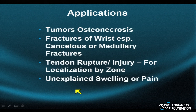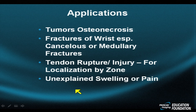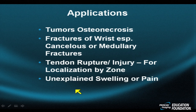Osteonecrosis is a diagnosis that has fallen to MRI. In the past, we used dynamic contrast-enhanced MRI to improve accuracy, but accuracy is only improved with dynamic imaging by perhaps one to two percent. Non-contrast MRI looking for areas of necrotic low signal bone on all sequences has a very high accuracy rate and positive predictive value for AVN, or avascular necrosis.